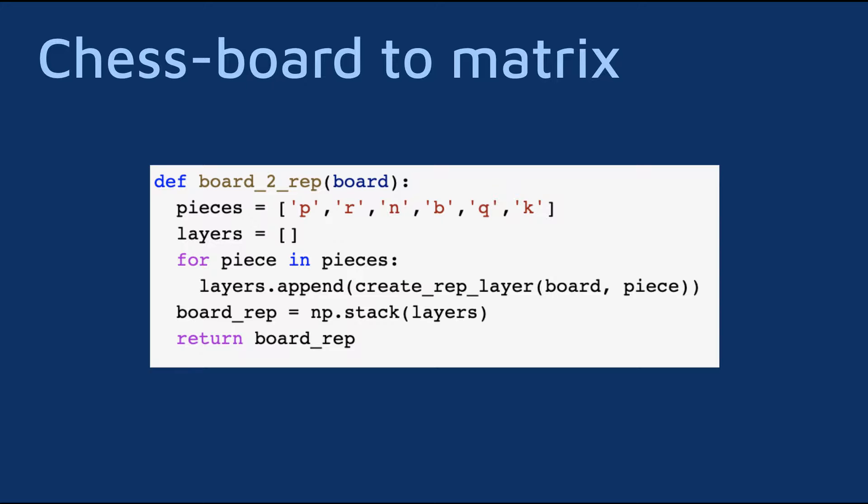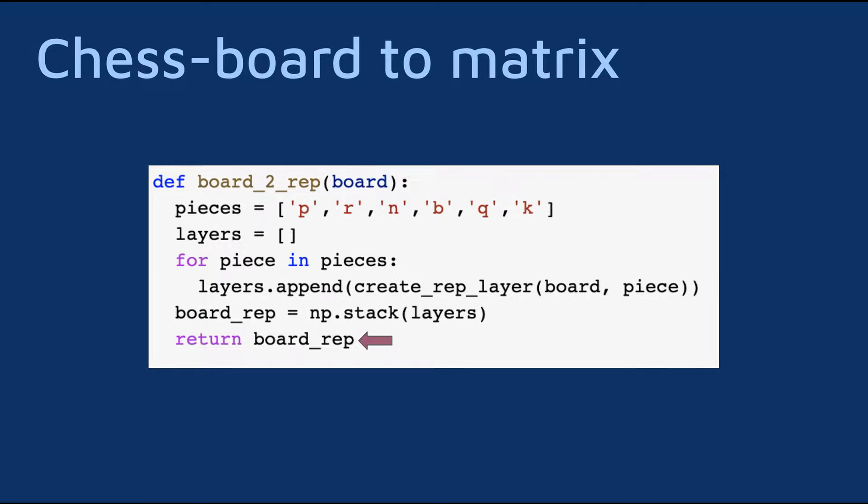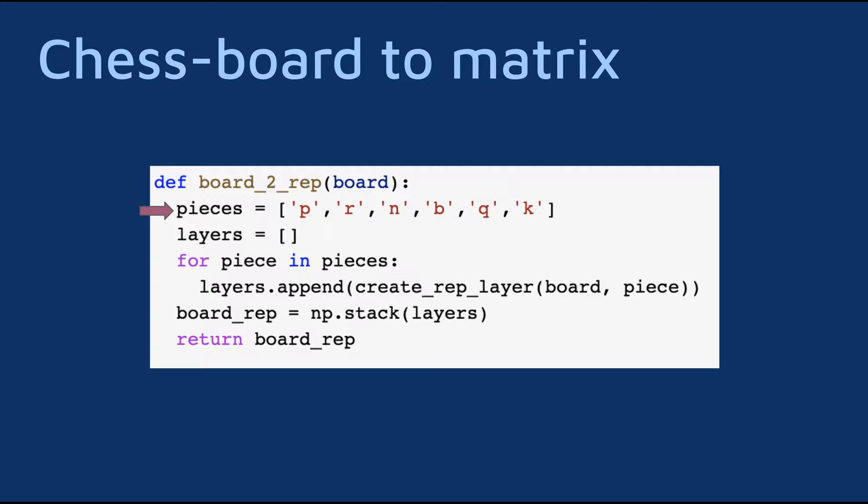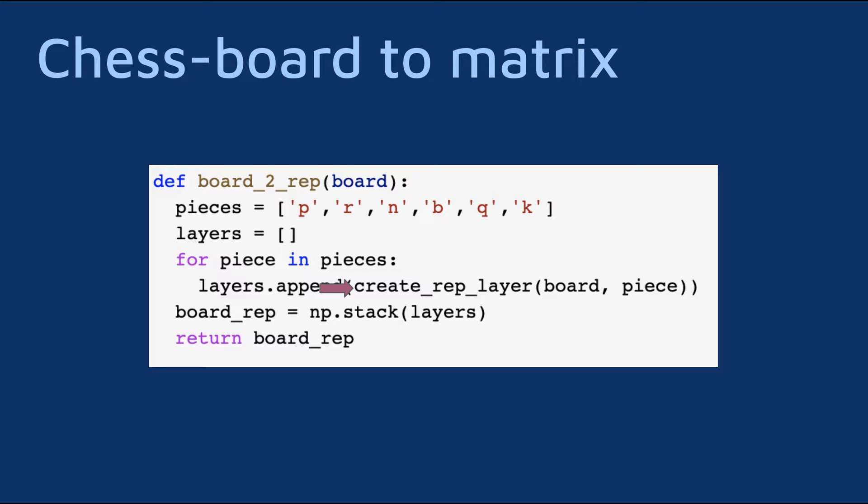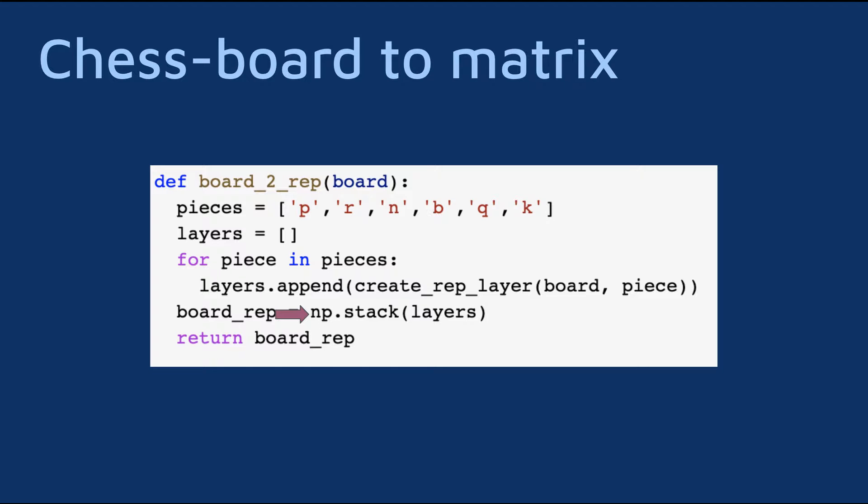We will start with a high-level function that takes a board object from the Python chess package and convert it into a matrix that represents the information of the board. Each piece type is represented by a different letter. We'll loop through them, create a feature map for each type, and then combine them into a single 3D tensor. This tensor will be fed into the CNN.